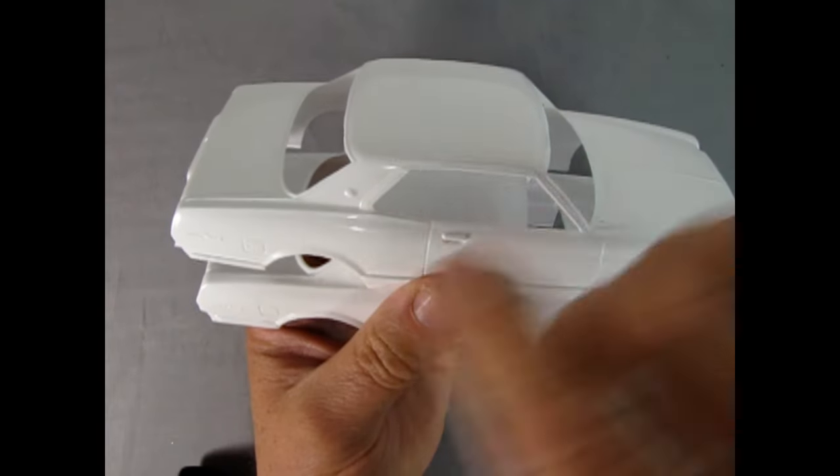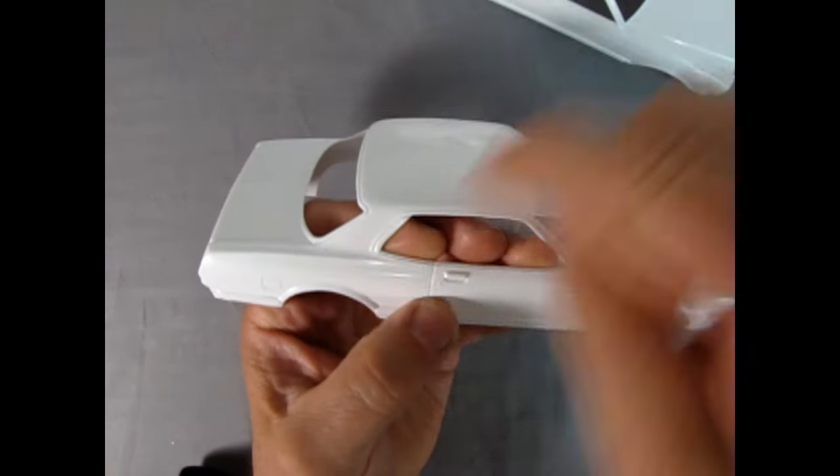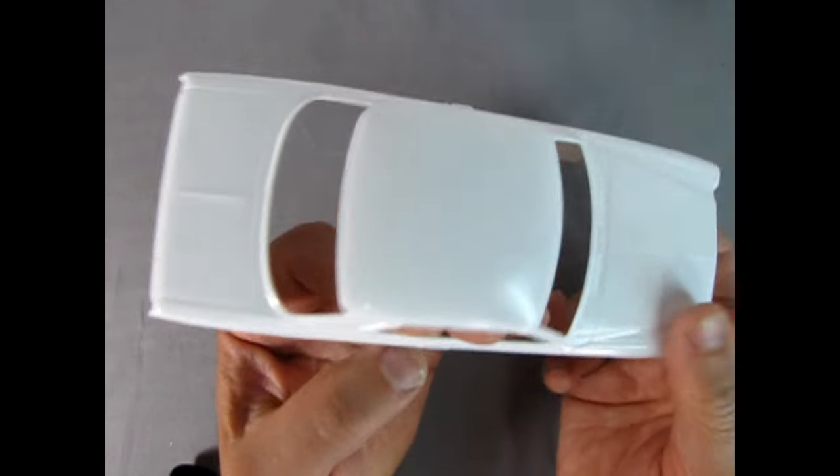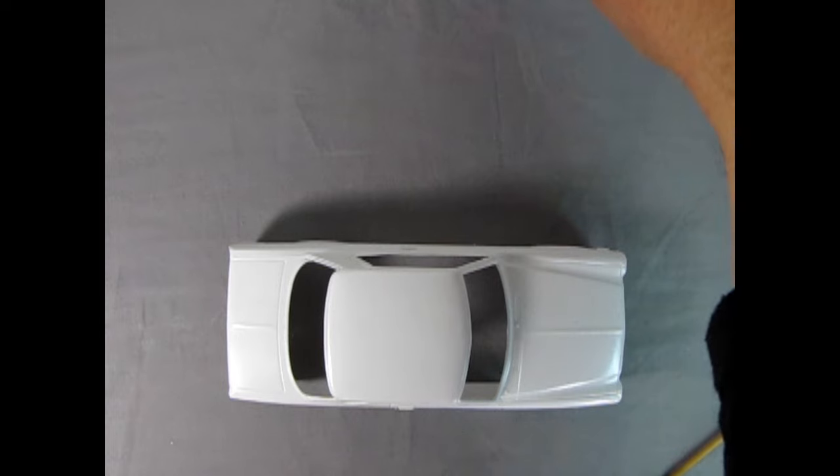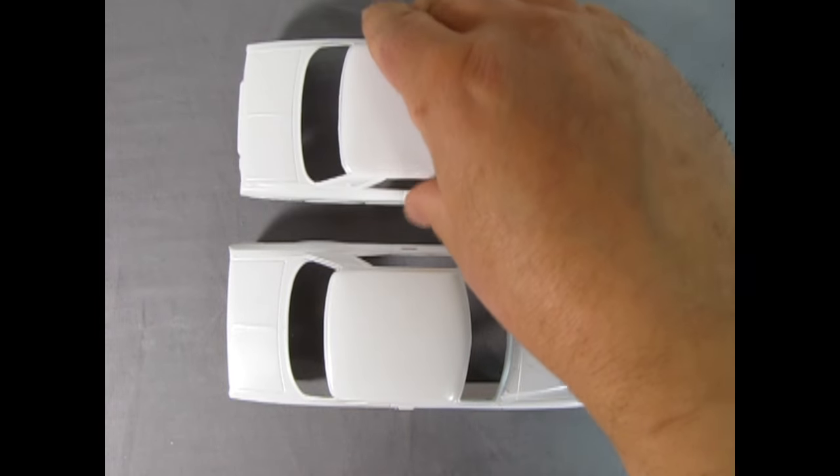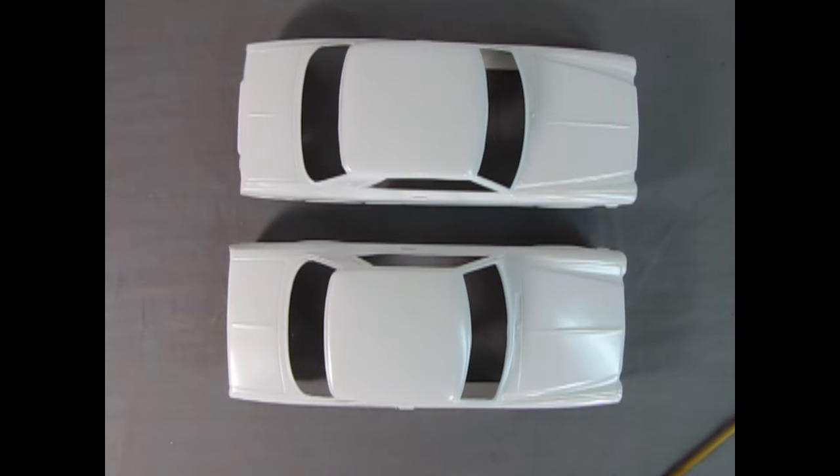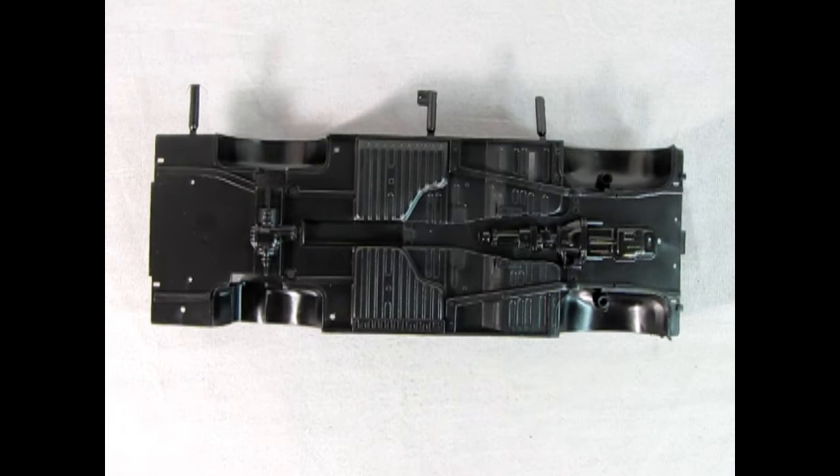Oh, and the Mark II also has that little emblem right there, whereas the chaser does not. So again, it's really quite cool to see the differences between the two body styles. And I'm really thankful that Aoshima is allowing us to build both cars in one box. Next up, we have the chassis, and I'm only going to show one because they're identical.